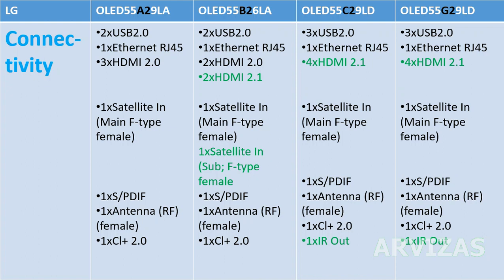Satellite input is a main F-type female connector, same for all models. The B2 model also has a second satellite F-type female input. There is also one S/P-D/F port and another RF female port. One CI 2.0 port is included. C2 and G2 models also have an eARC out port.